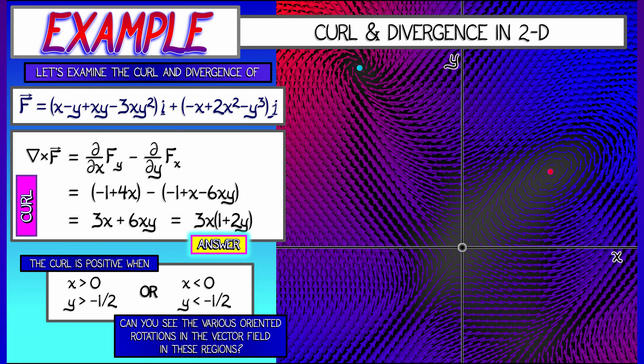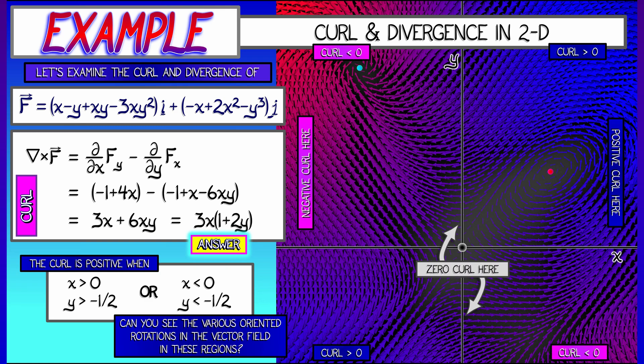Well you can see regions where that curl is positive and indeed you get a counterclockwise rotation there. Whereas on the complement, where the curl is negative, you can see motion in the clockwise direction. Now you can't always draw good pictures of vector fields. Maybe you can't really see what's going on, but computing the curl helps to understand.